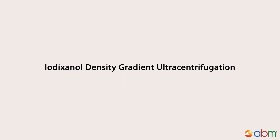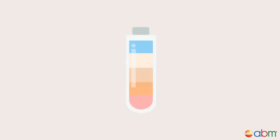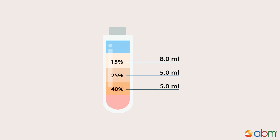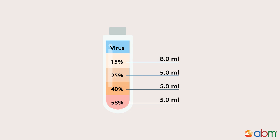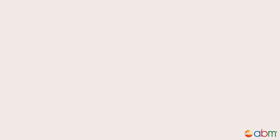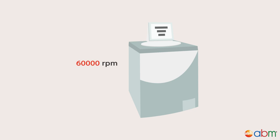Prepare the iodixanol density gradient in ultracentrifuge tubes by adding the reagents in the following order: 8 ml of 15% iodixanol, 5 ml of 25% iodixanol, 5 ml of 40% iodixanol, and 5 ml of 58% iodixanol. Overlay your supernatant onto the iodixanol gradient, taking care not to disturb the gradient layers. Centrifuge at 60,000 rpm for 1 hour at 10 degrees Celsius.